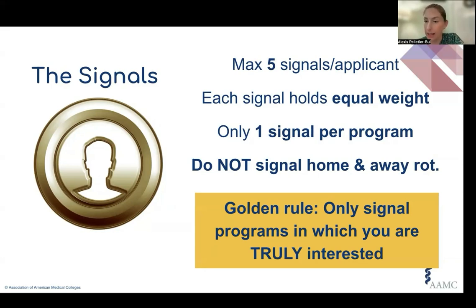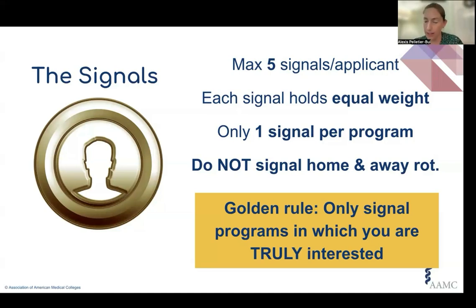Last year, the AAMC changed their guidance wanting every applicant to signal their top most interested programs regardless of home or away status, trying to do this for equity reasons for those who maybe did not have a home institution. Because we previously considered home and away like two freebies, we went up to seven signals and followed AAMC guidance of signaling home and away if they're in your top seven. This led to a ton of confusion because home and away institutions are typically high yield for getting an interview, and applicants were getting mixed messages from national guidance, CORD, and the actual programs. Because of that, we have decided to go back to our original approach of five signals — do not signal home and away.